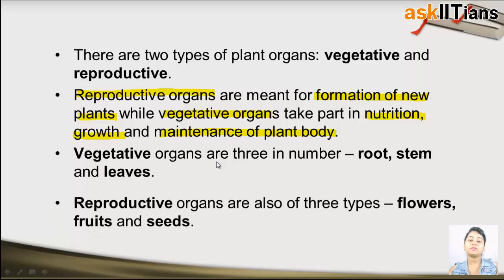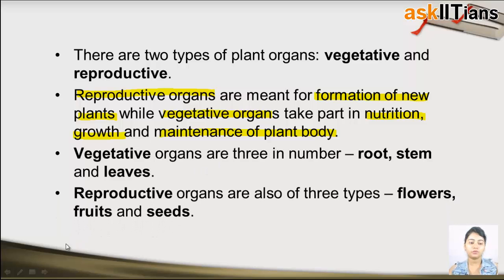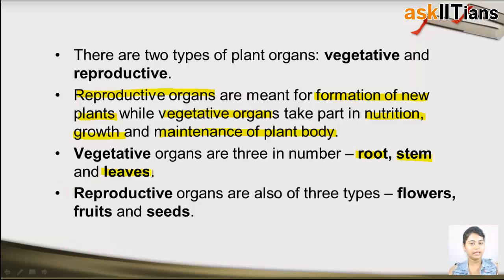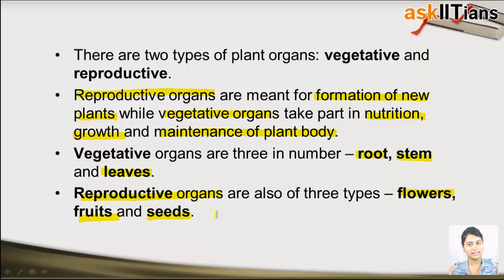Vegetative organs are three in number: first is root, second is stem, and third is leaf. Reproductive organs are also three in number: flowers, fruits, and seeds.